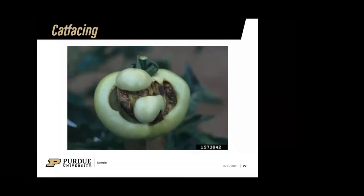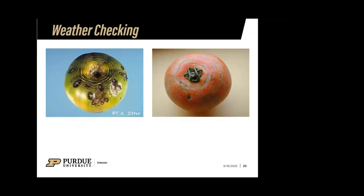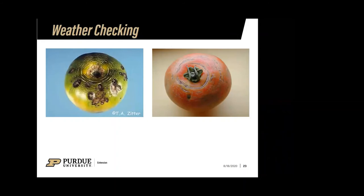Weather checking is a condition we see when there are several mornings or days of heavy dew that sets on the fruit and doesn't dry off until late in the morning. As we get into the coming weeks with more dew, cooler nights, and cooler mornings, that moisture doesn't evaporate quickly from the skin. When it stays on the fruit, it causes the discoloration and small circular cracks around the shoulder that you see in these pictures.